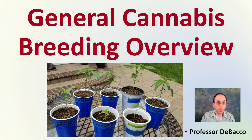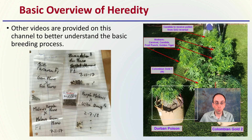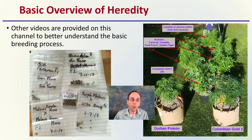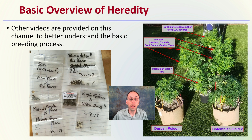Welcome to this DeBacco University video. We're looking at a general cannabis breeding overview, just kind of a general overview of something that can be quite complex. Hopefully this will provide a little description and allow you to develop some basic understanding. Other videos are provided on this channel to better understand the basic breeding process. We can look at Punnett squares and Mendelian genetics — we'll touch on that just a little bit here.